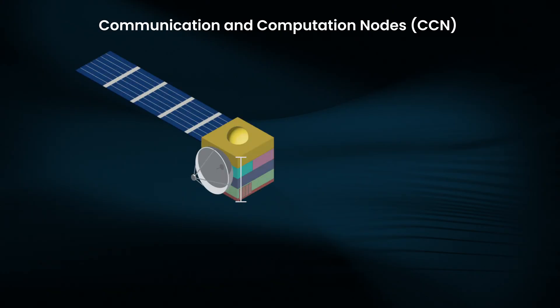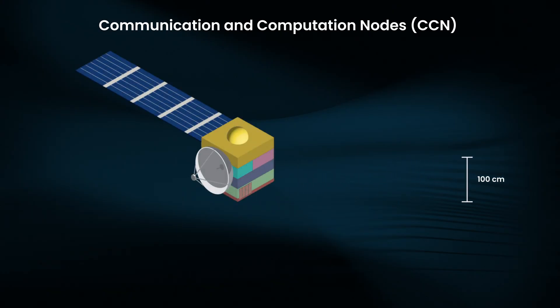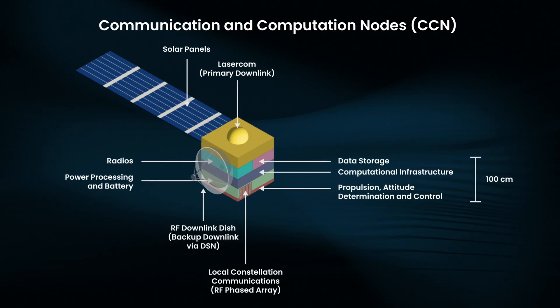CCNs are mini-fridge sized spacecraft which collect and compress data from multiple LNs. They are equipped with laser communication terminals for sending large amounts of data back to Earth, and we expect each CCN to keep track of around 100 LNs.